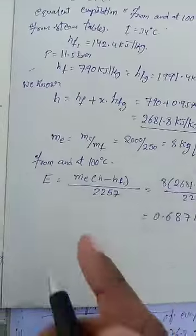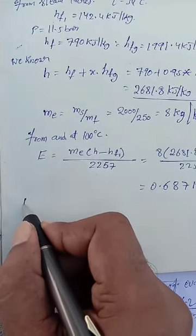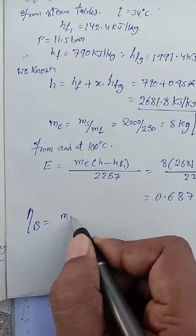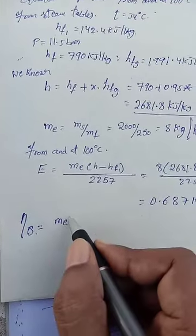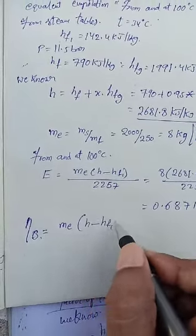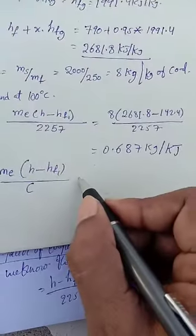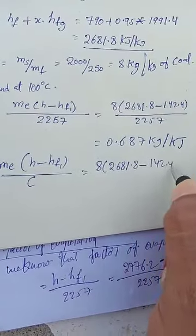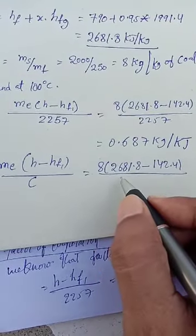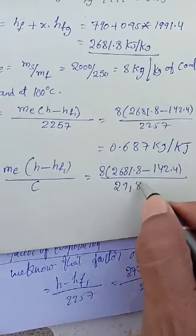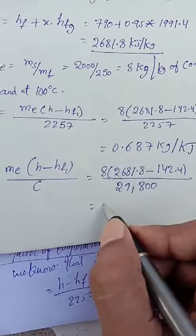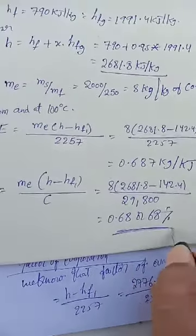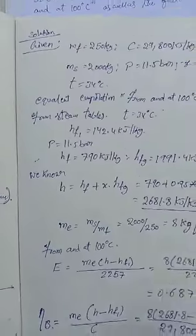Next we go for the efficiency of the boiler. Boiler efficiency = Me × (H − HF1) divided by calorific value C. Substituting all values including the given calorific value, we get the answer — 68%. This is the solution for this problem.